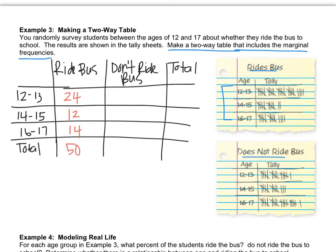Okay, now let's go to don't ride the bus. In this section down here, there were 16 people who don't ride the bus in 12 to 13, there were 13 people in 14 to 15, and 21 people in the oldest age range, which gives us 20, 30, 40, 50. So 50 of each.